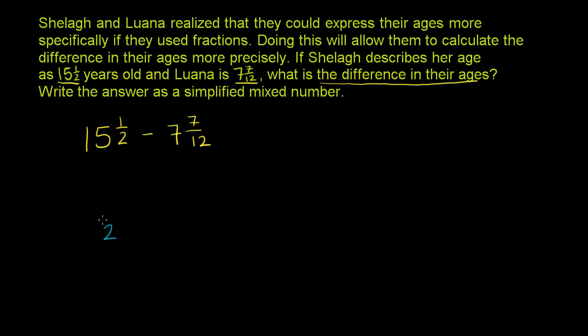We're going to keep 2 in the denominator. And as an improper fraction, 2 times 15 is 30, plus 1 is 31. So 31 over 2 is the same thing as 15 and 1 half. So these are equivalent.